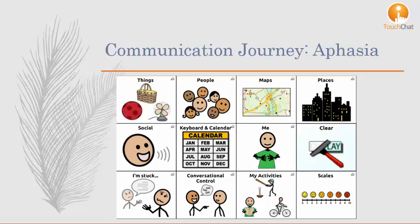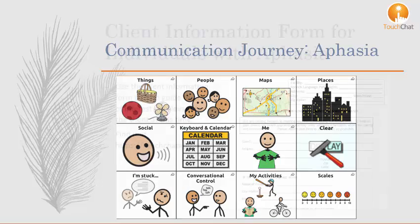The default Communication Journey Aphasia layout will begin with a 12-location grid. Based on the client's capability, the grid size may need to be changed and then built upon as the client progresses.